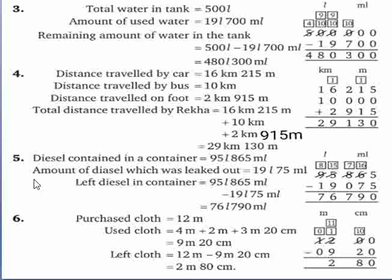Question number 5: A container contained 95 litre 865 ml of diesel. Due to leakage, 19 litre 75 ml of diesel was leaked out. Find how much diesel was left in the container. Write the statement — diesel in container equal to 95 litre 865 ml, amount leaked out 19 litre 75 ml. Subtract karenge. So our answer is 76 litre 790 ml.